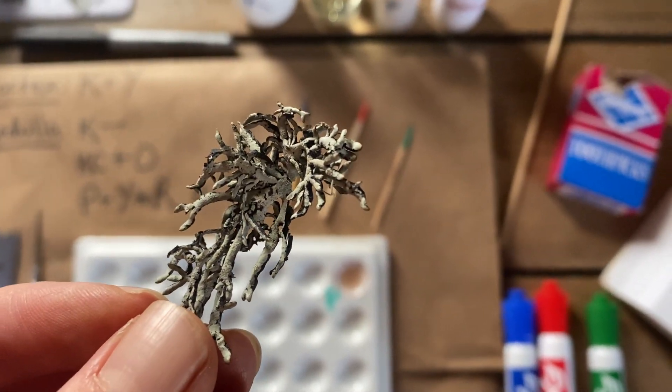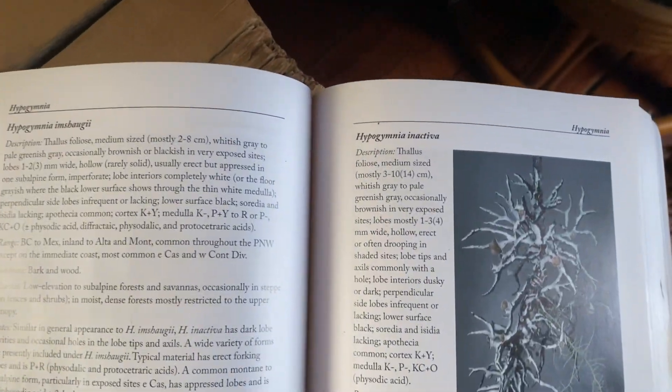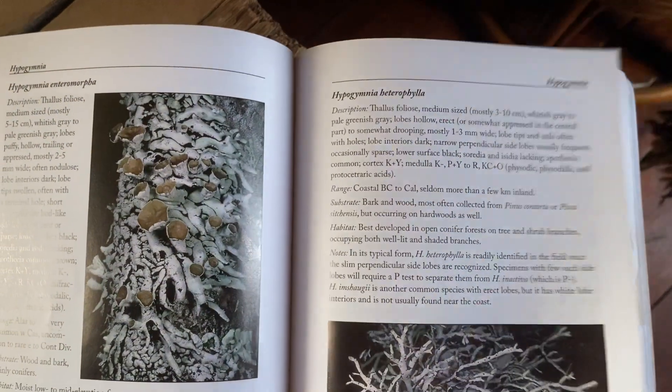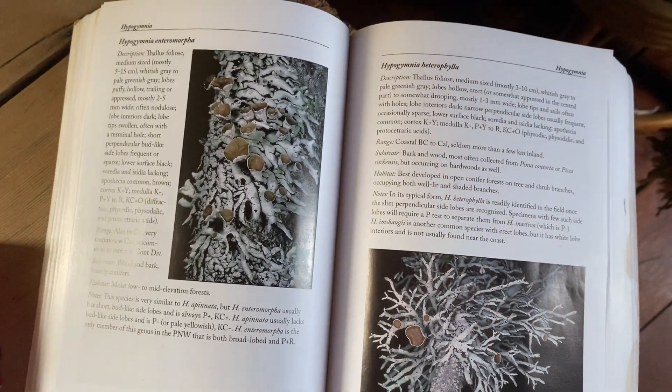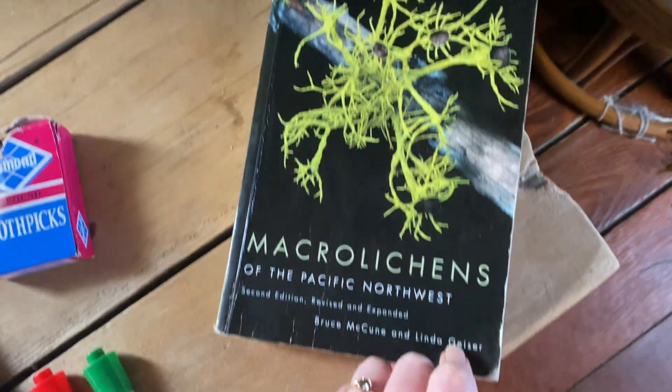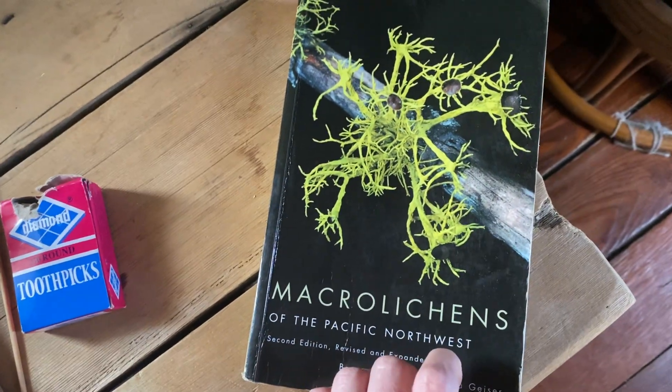However, I can't decide between two species of Hypogymnia: Hypogymnia inactiva and Hypogymnia heterophila. So I'm in Humboldt County, California. I'm using the McCune and Geiser Macrolichens of the Pacific Northwest. It's an excellent resource. This is the 2009 edition.